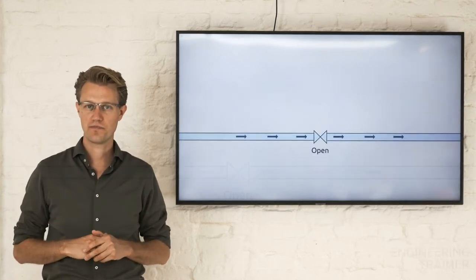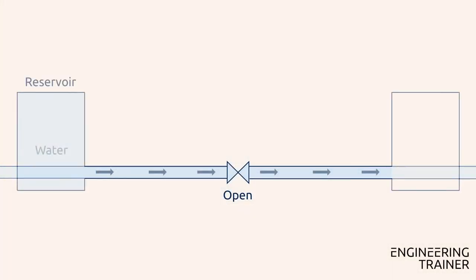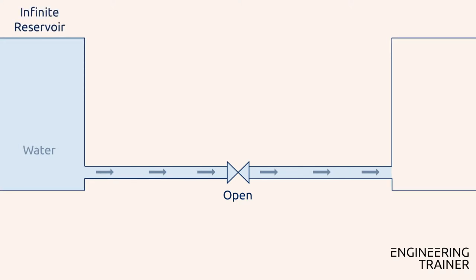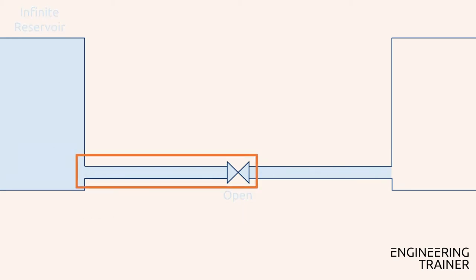The pipe is connected to a full reservoir upstream and an empty reservoir downstream, which we assume to be infinite in size such that the pressure at the inlet can be considered constant. Again, we focus on the upstream section.